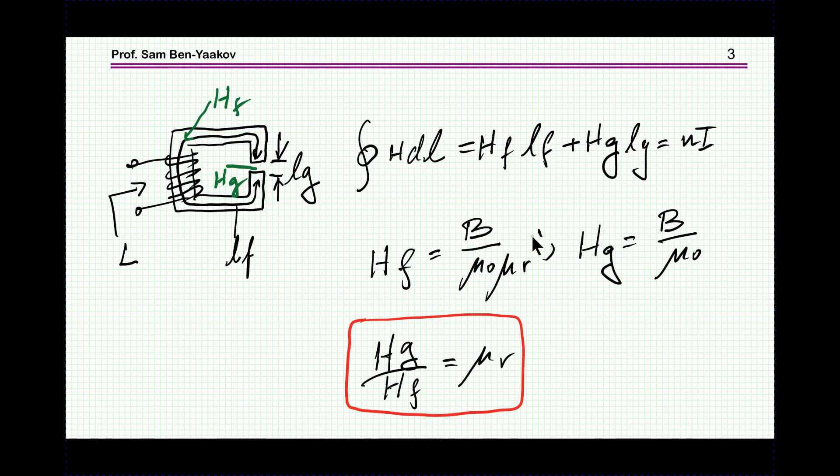Now BF and BG are the same because we are assuming that all the magnetic flux is flowing through here and I'm neglecting possible fringes and dispersion. I'm assuming that the magnetic flux is straight here so the density of the magnetic flux is the same.